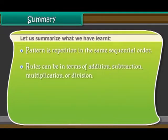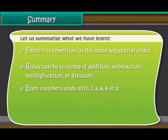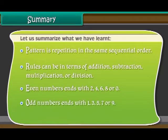Rules can be in terms of addition, subtraction, multiplication, or division. Even numbers end with 2, 4, 6, 8, or 0. Odd numbers end with...